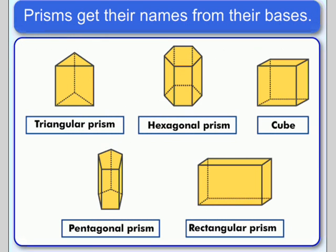Prisms get their name from their bases. So in this first example, if you look at the base, it's a triangle, and we have two of them that are parallel and congruent — that's a triangular prism. This next shape gets its name from its base, which is a hexagon, and it has two hexagonal bases which are congruent and parallel. A cube has a square base, a pentagonal prism has a pentagon-shaped base, and a rectangular prism has a base that is rectangular in shape.